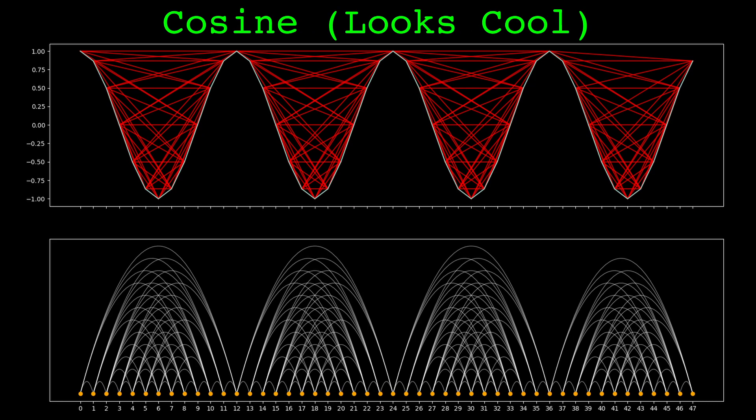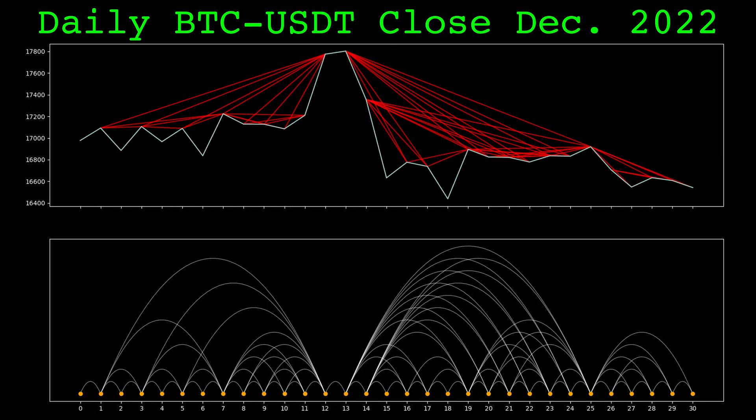And here is a visibility graph for a cosine wave with 4 cycles. And here is the visibility graph using daily Bitcoin data from December of 2022.